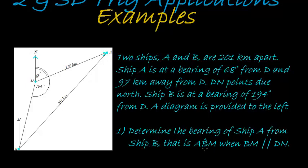Determine the bearing of ship A from ship B — that is, we have to calculate angle ABN. So what is the bearing? N is also pointing north.